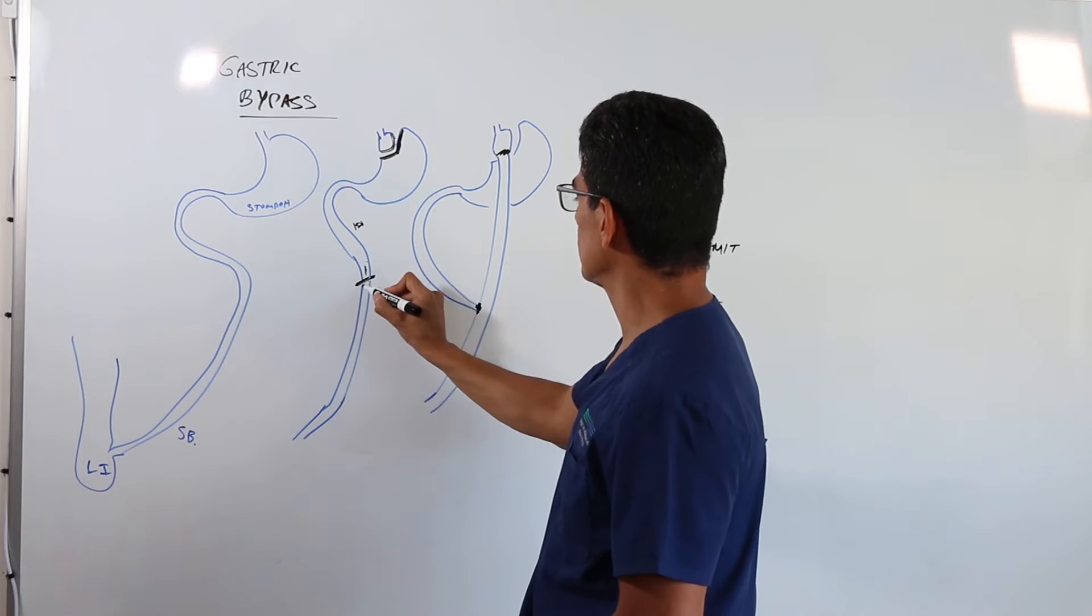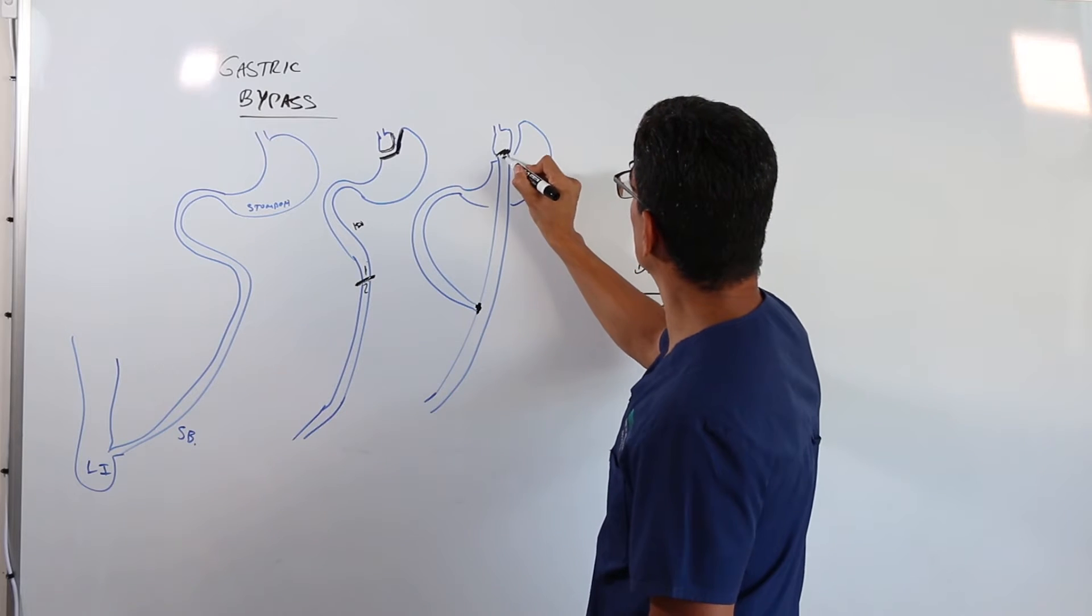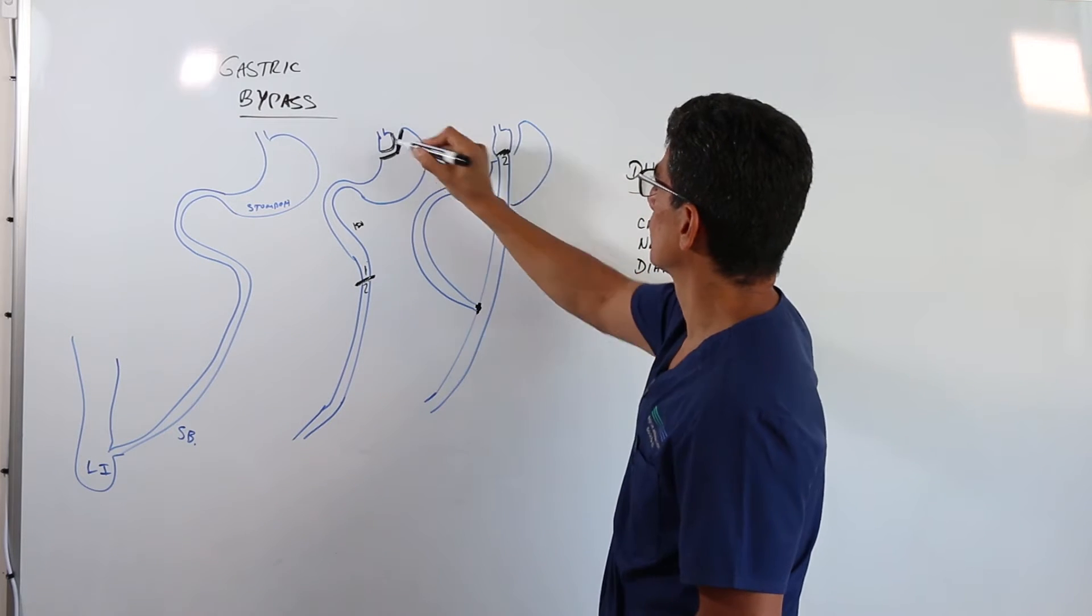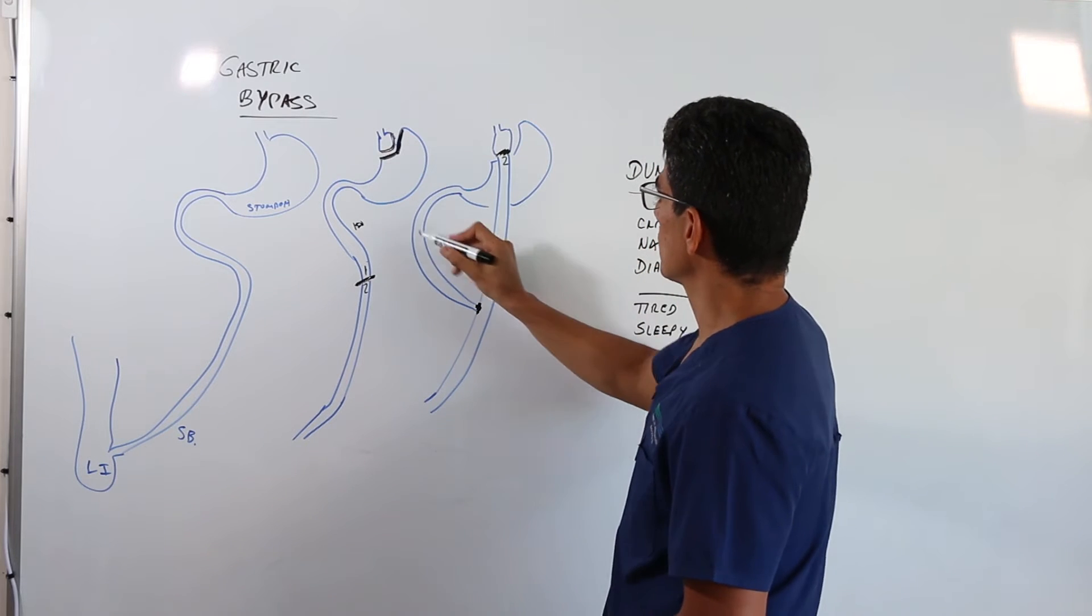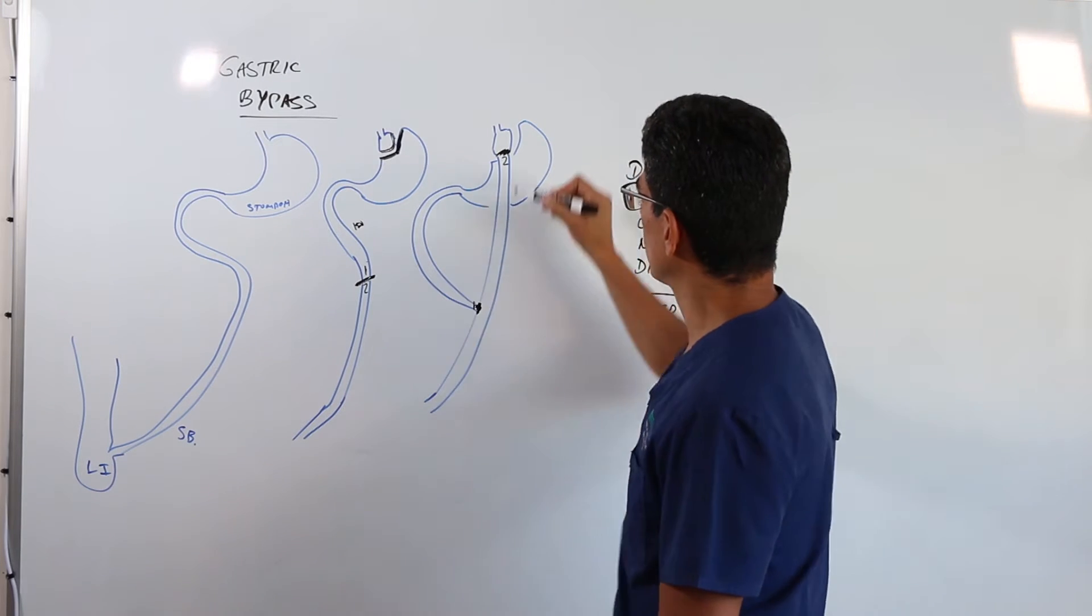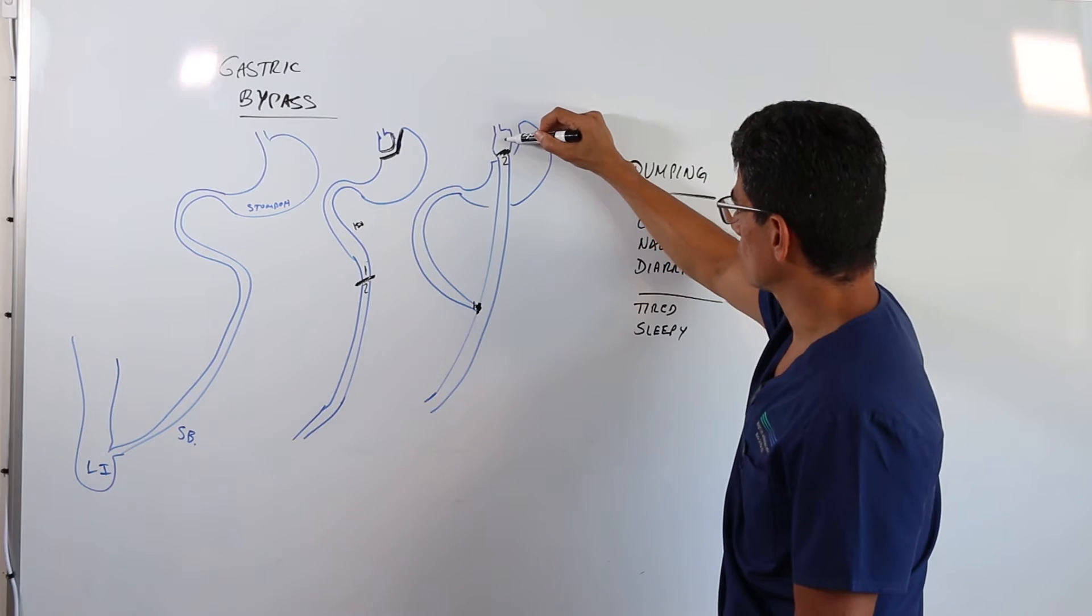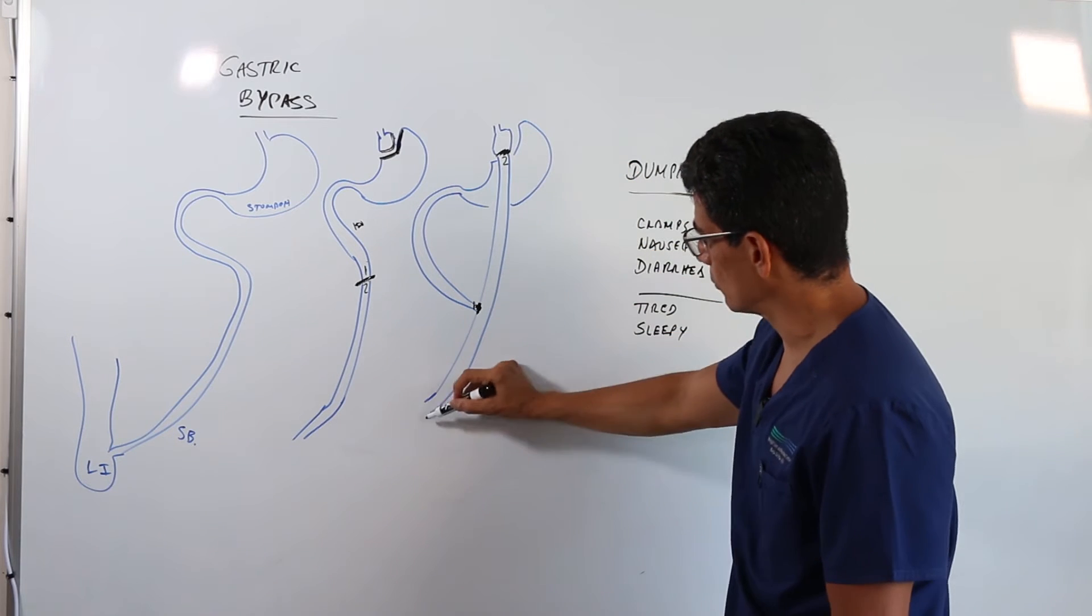So the next thing that's going to happen is we're going to start reconnecting things. So this bowel here is going to come up and be connected against the small stomach and the number one is going to come here. So what happens then? What happens is that when you eat, you're going to be limited in terms of the amount of food you eat because you have a small stomach. Food's going to go straight into the bowel down this way.